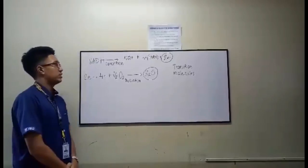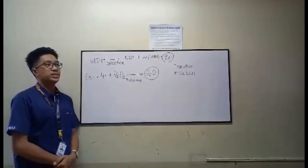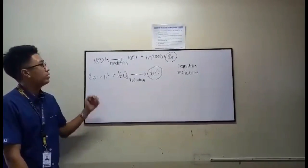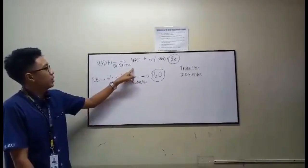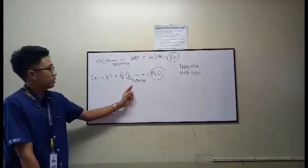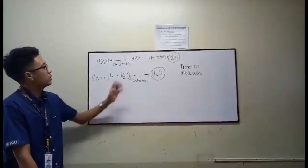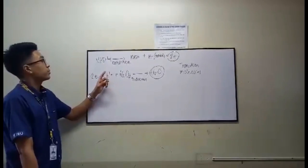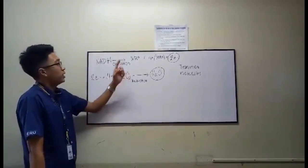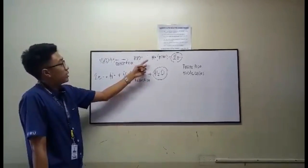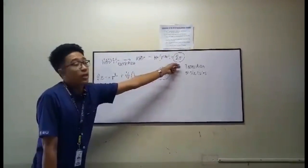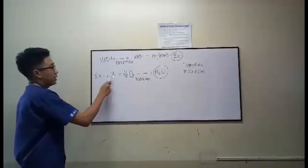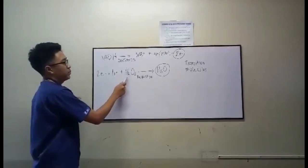ETC has two processes: oxidation and reduction. Oxidation is the process of losing electrons, and reduction is the process of gaining electrons. In oxidation, NADH will undergo oxidation — the reactants are NADH plus a hydrogen proton and an electron. For reduction, 2 electrons plus a hydrogen proton plus one-half oxygen undergo reduction, and the product will be water.